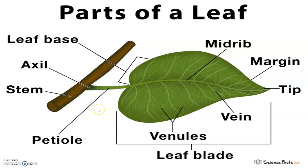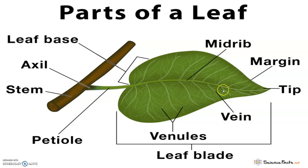In monocotyledons, the leaf base expands into a sheath covering the stem partially or wholly. In some leguminous plants, the leaf base may become swollen, also called pulvinus. The petiole helps hold the leaf up to the light; long thin flexible petioles allow leaf blades to flutter in the wind, cooling the leaf and bringing fresh air to the leaf surface. The lamina or leaf blade is the green expanded part of the leaf with veins and veinlets. There is usually a prominent middle vein known as the midrib. The veins provide rigidity to the leaf blade and act as channels for transport of water, minerals and food materials. The shape, margin, apex, surface and extent of incision of the lamina vary in different leaves.